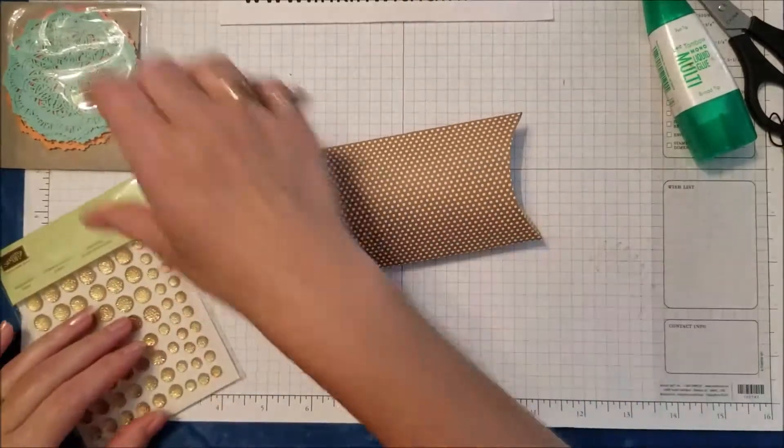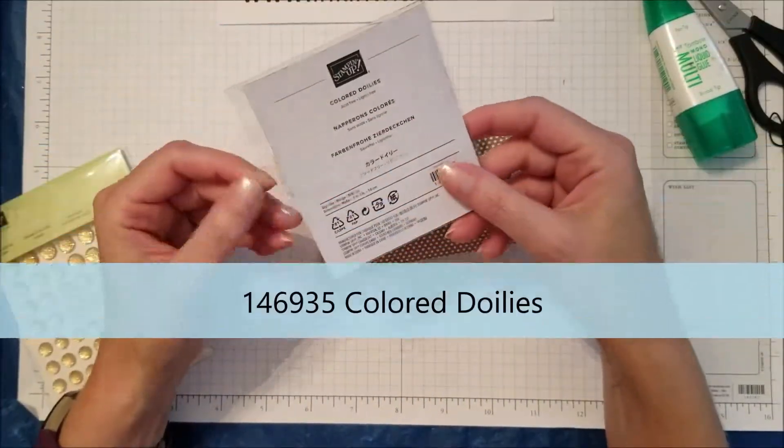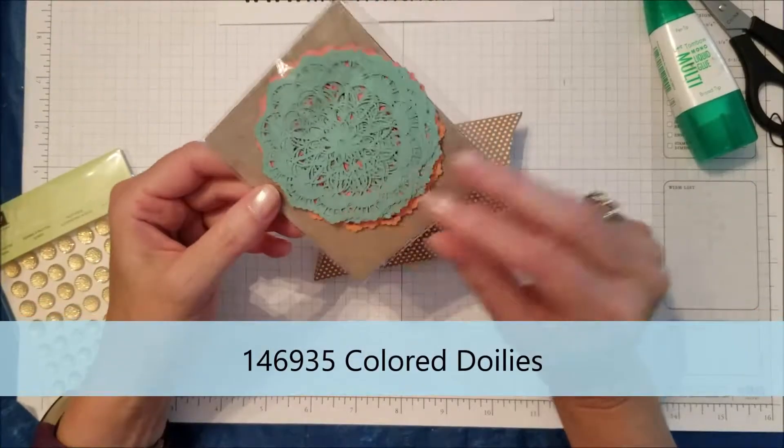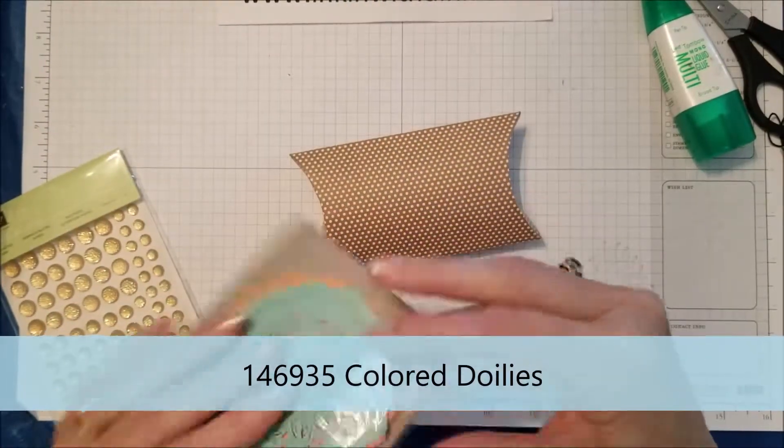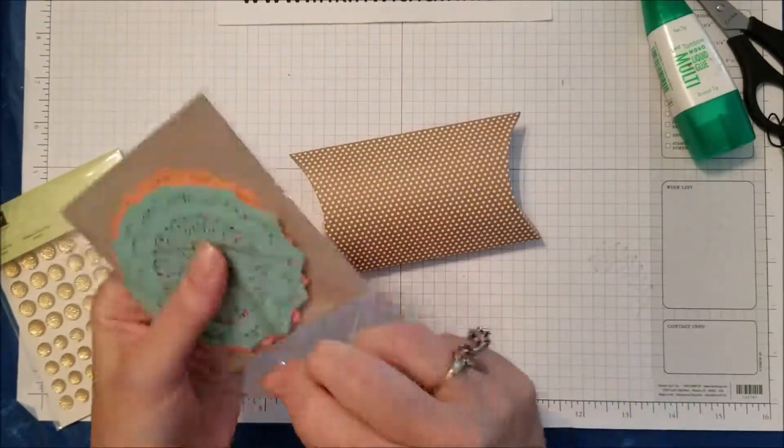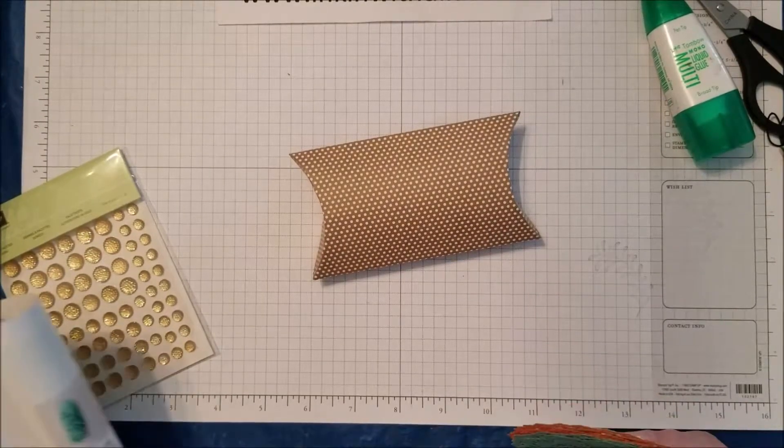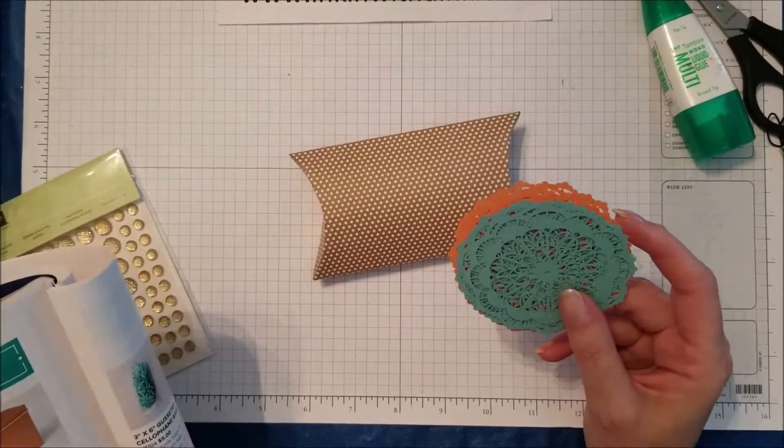Now what we're going to use is I'm going to take one of my colored doilies that are in the catalog. I love these, they are such pretty colors and let me open it up and show you the colors. You actually get 24 doilies, six each in the four colors.